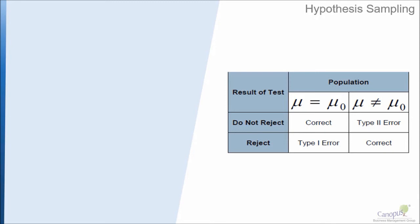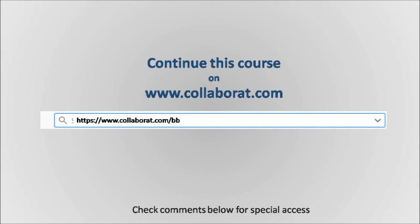Here is a table that can help us in decision making. There could be a scenario where we take a correct decision when actually there was no change in the process and we were also able to say that there is no change. That could be a correct scenario of decision making.